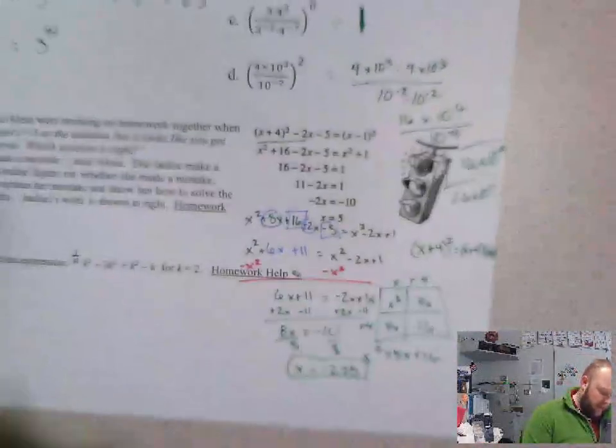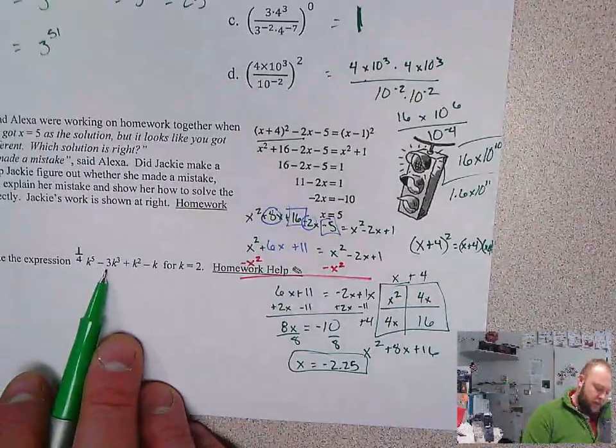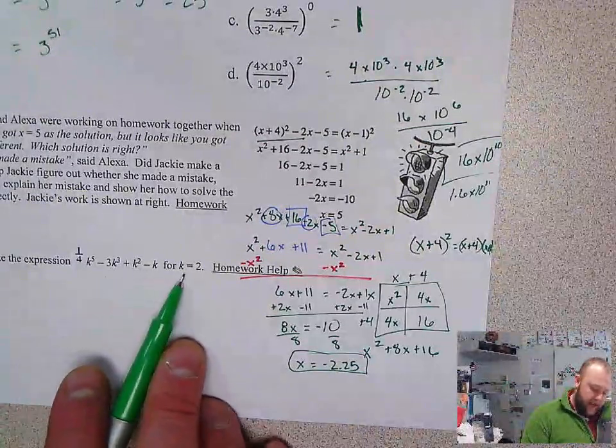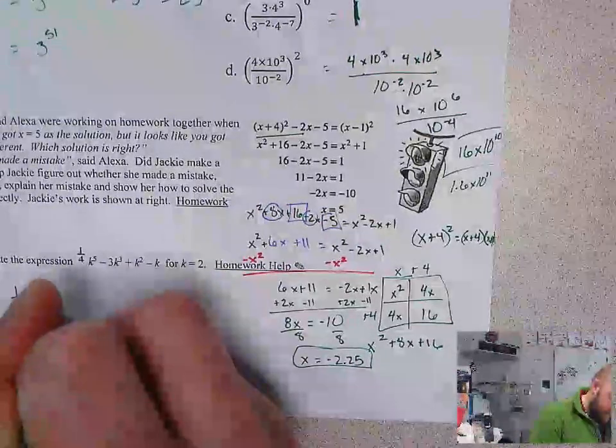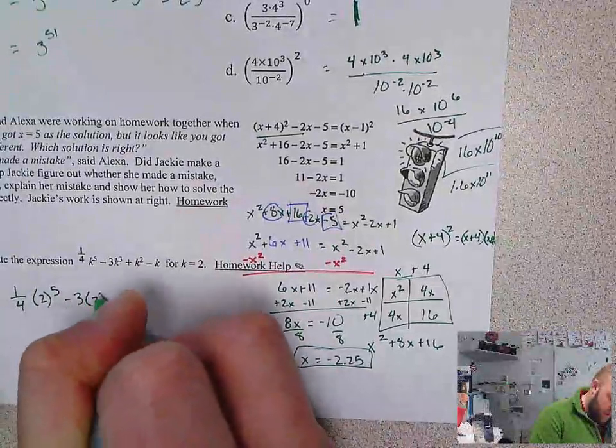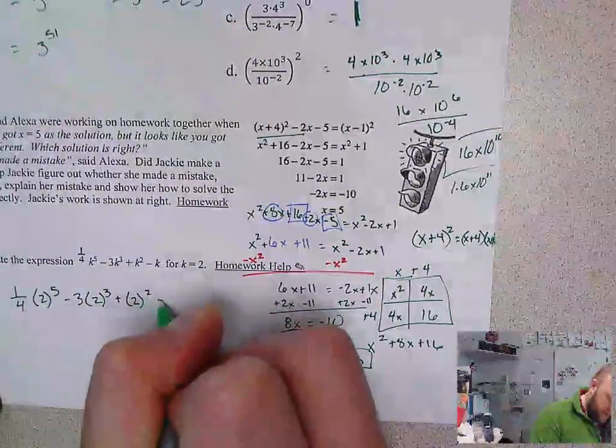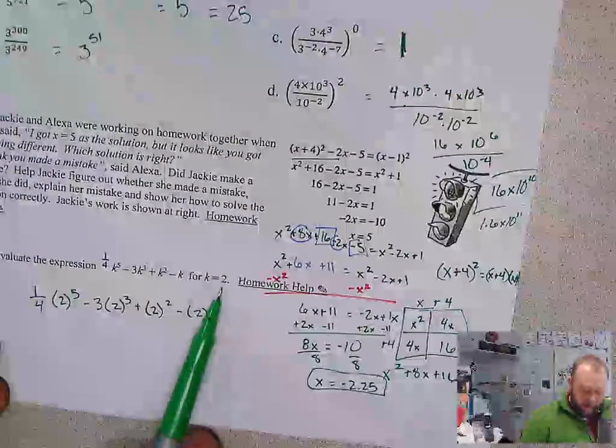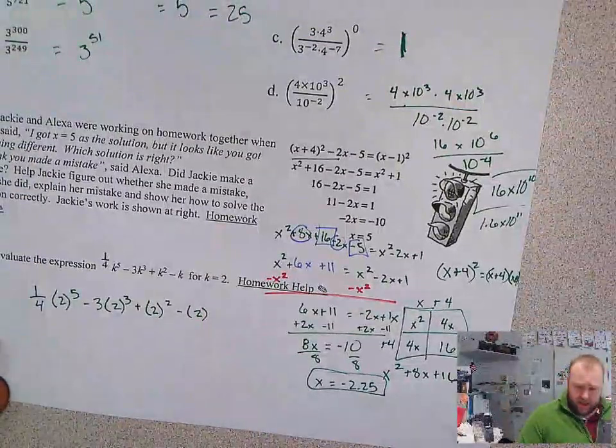Final problem. Evaluate the expression 1/4 k to the 5th minus 3 times k to the 3rd plus k squared minus k for k equals 2. 1/4 times 2 to the 5th minus 3 times 2 to the 3rd plus 2 squared minus 2. Remember whenever we input a value for the variable, we use parentheses to help us keep track of our order of operations.